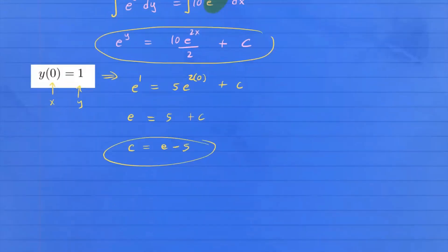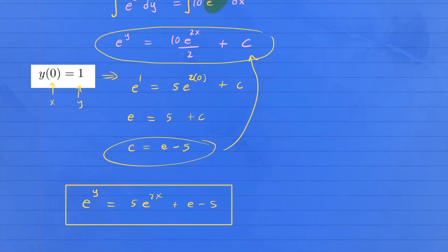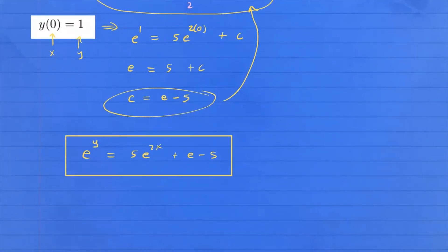Now we come back to our solution and plug in c. Our solution is e^y equals 10 over 2, that's 5, times e^(2x), and c is plus e minus 5.